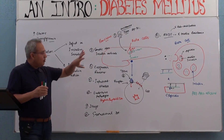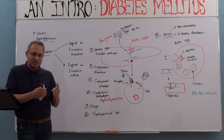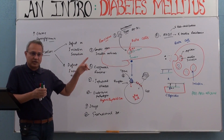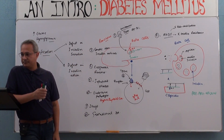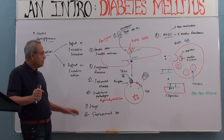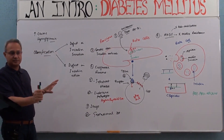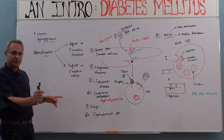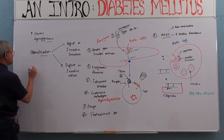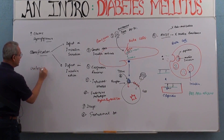Out of all of those, the three you must know are type 1, type 2, and MODY. That is the classification of diabetes mellitus. Now let's very quickly look at the criteria to diagnose.